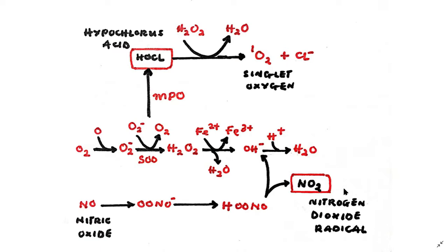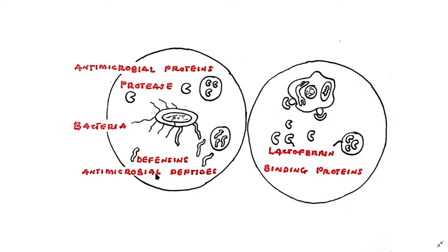Also used for this purpose are antimicrobial proteins. Now antimicrobial proteins are proteins that specifically damage or kill bacteria. Examples of antimicrobial proteins include proteases which kill various bacteria by destroying essential proteins and lysozyme which attacks the cell walls of gram-positive bacteria.